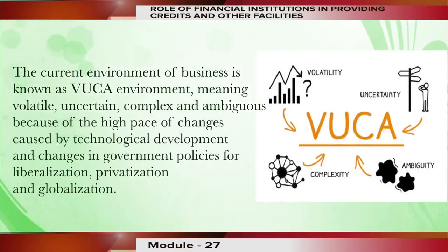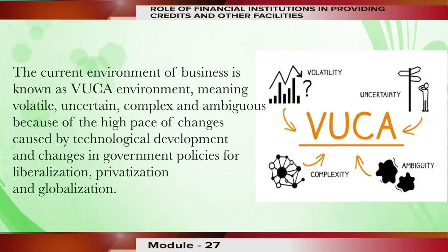The current business environment in the 21st century is a VUCA kind of environment: V means volatile, U means uncertain, C means complex, A means ambiguous. The kind of changes experienced in the last three decades is enormous, particularly because of the advent of ICT — Information Communication Technology.